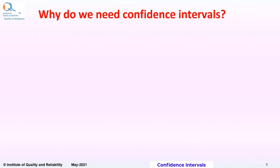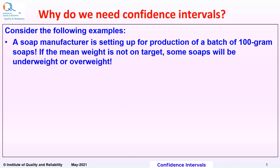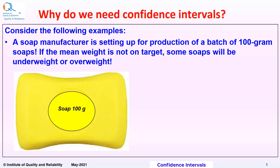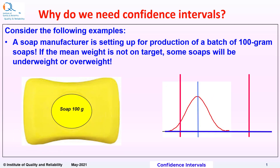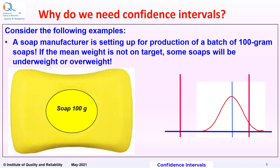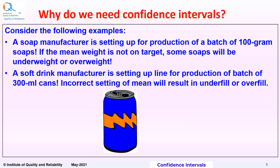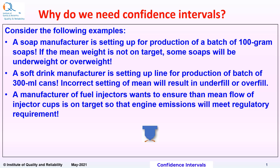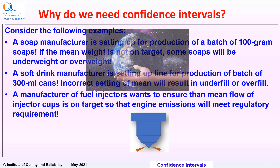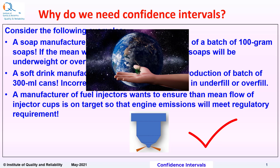But why do we need confidence intervals in the first place? Consider the following examples. A soap manufacturer is setting up for production of a batch of 100g soaps. If the mean weight is not on target, some soaps will be underweight or overweight. A soft drink manufacturer is setting up a line for production of a batch of 300ml cans. Incorrect setting of the mean will result in underfill or overfill. A manufacturer of fuel injectors wants to ensure that mean flow of injector cups is on target so that engine emissions will meet regulatory requirements.